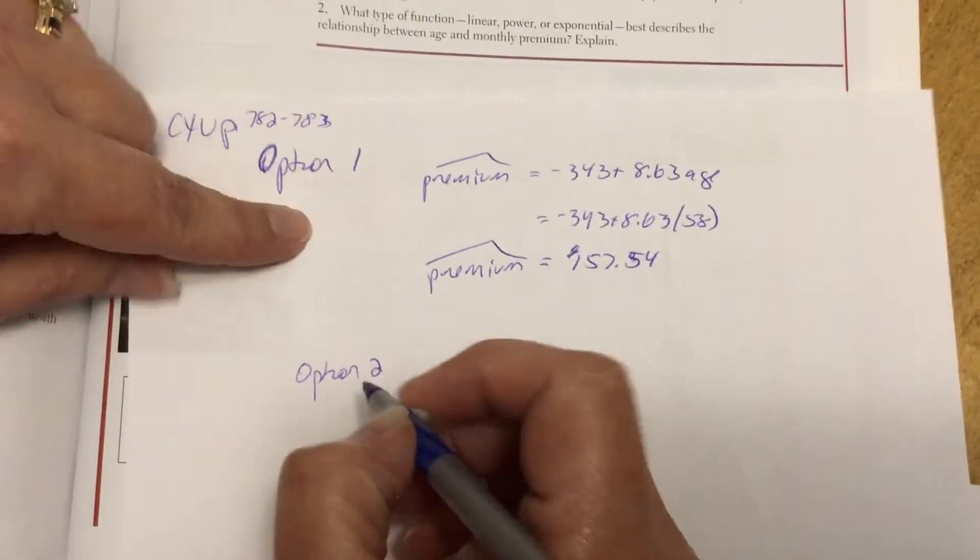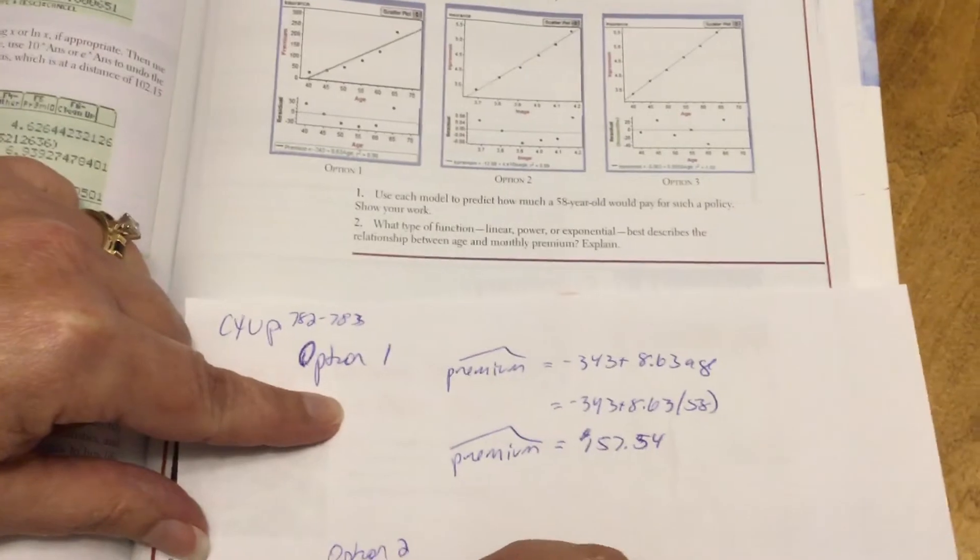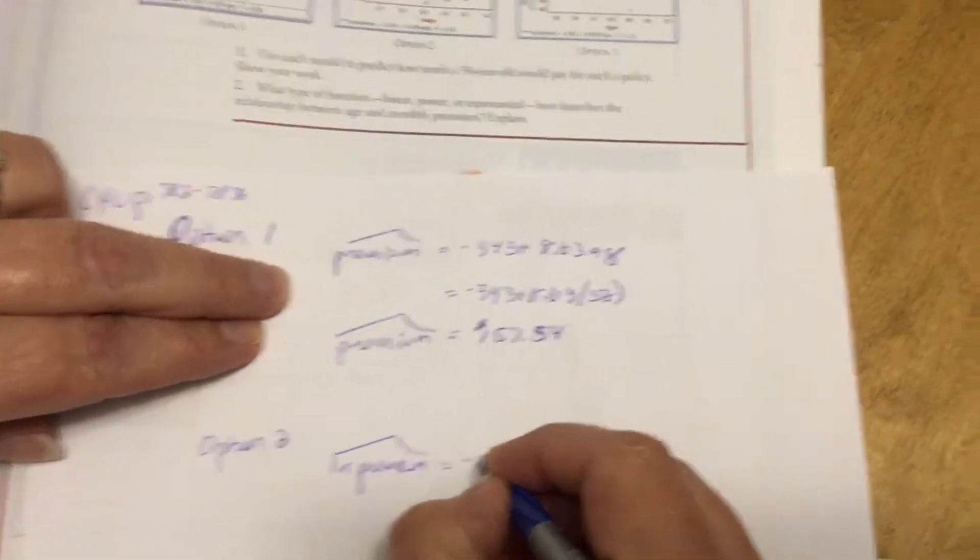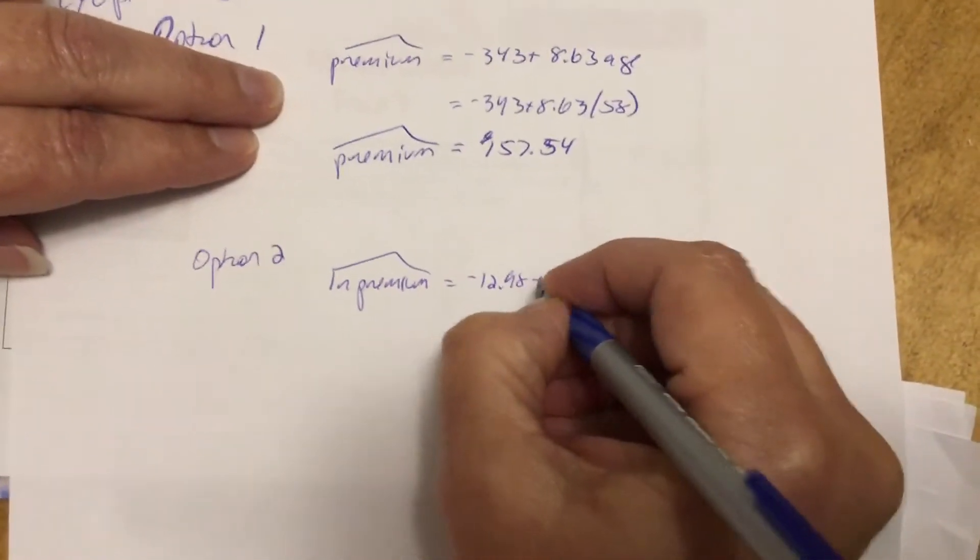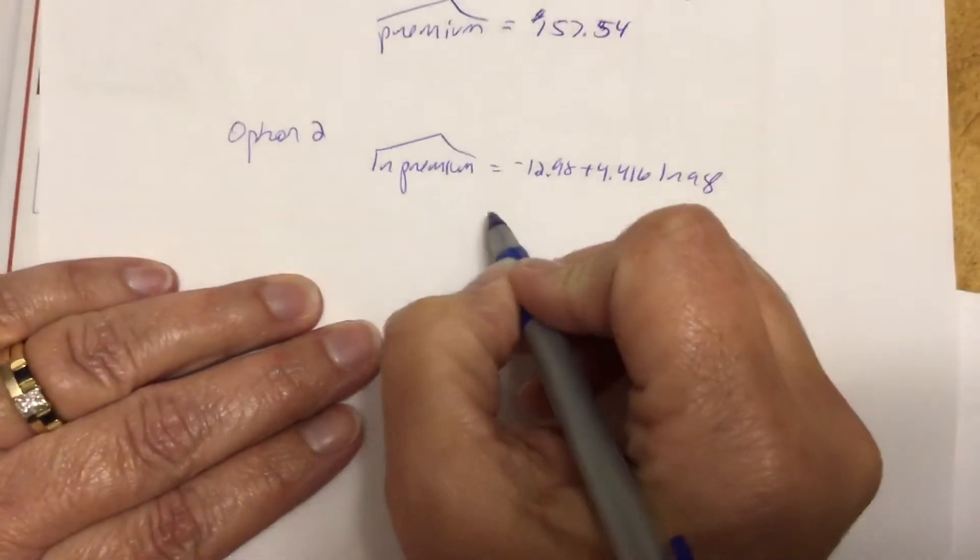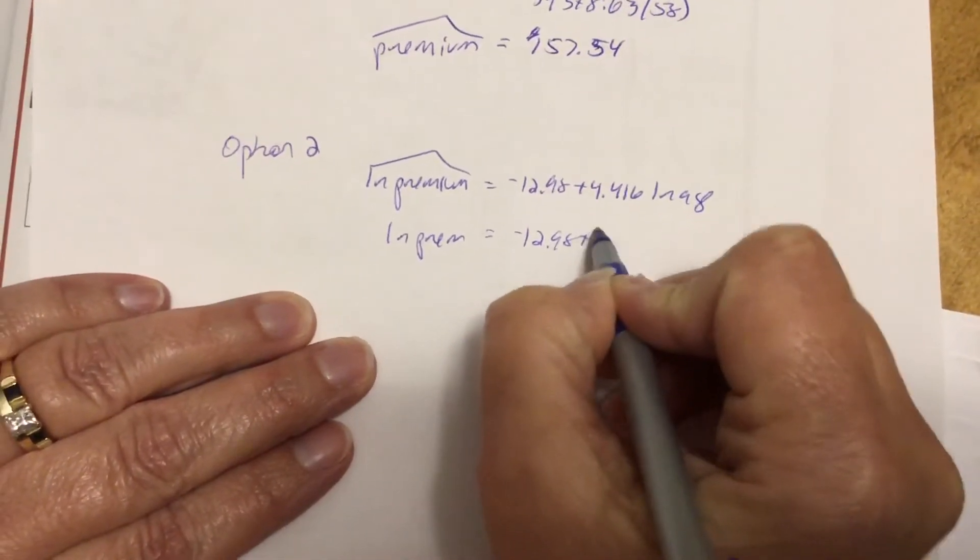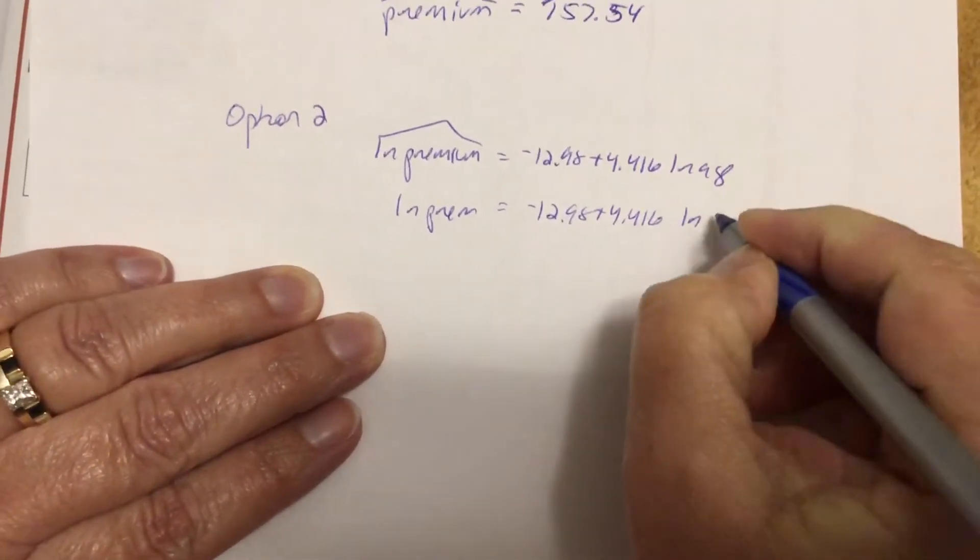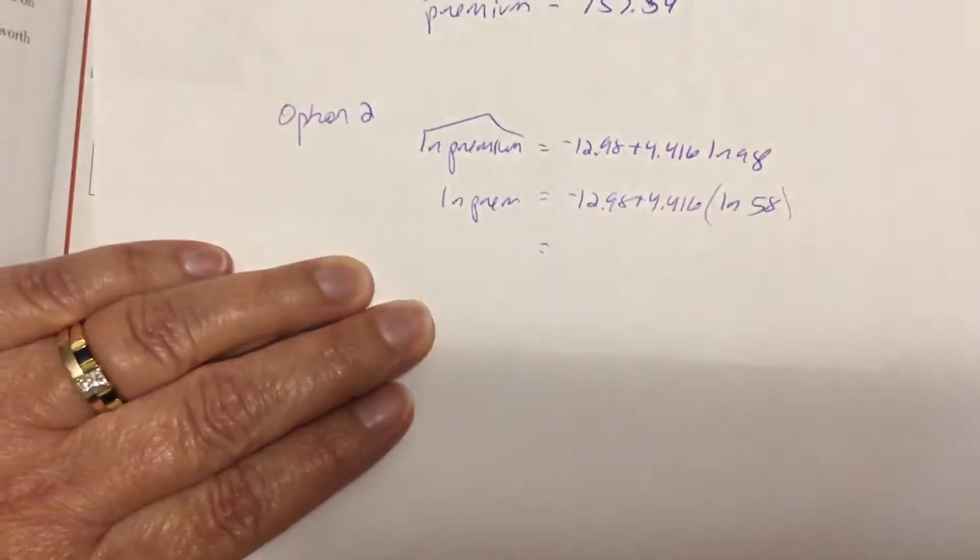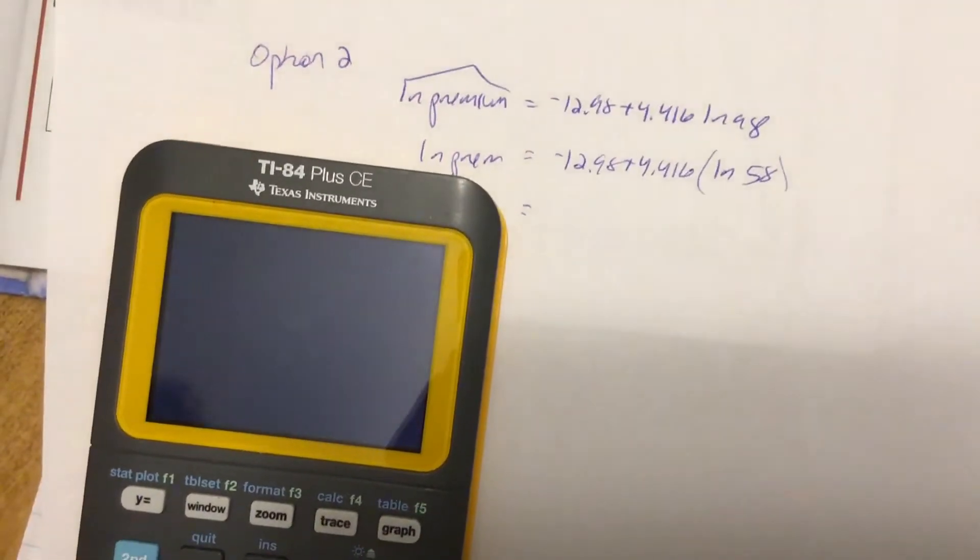If we go to option two, I'm going to flip here, I'm going to write this least squared regression line down. So now I have the natural log of the premium equals negative 12.98 plus 4.416 times the natural log of the age. So let's see, I'm going to abbreviate, negative 12.98. I'm going to take the natural log of 58. Now, for those of you that had math 3 stem, you know what natural log is. It's just a logarithm with a base of E. Doesn't matter.